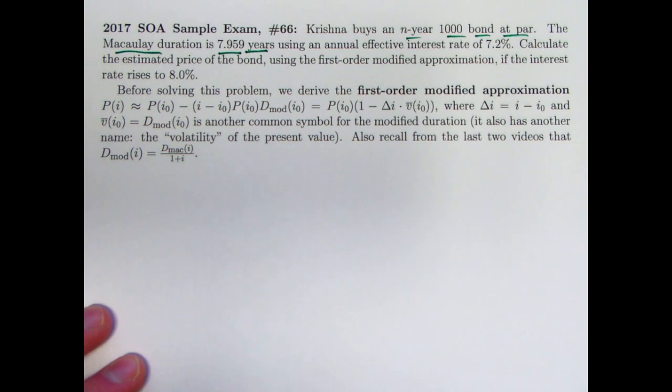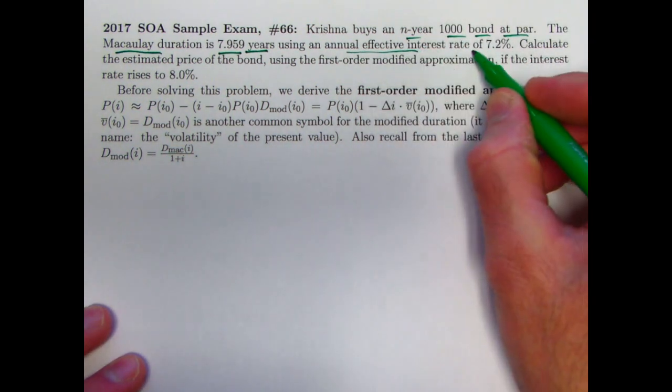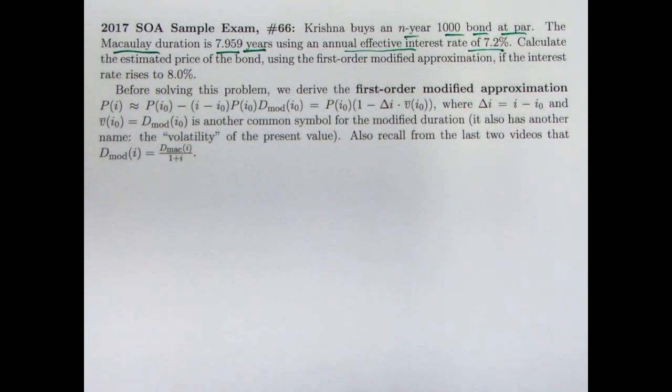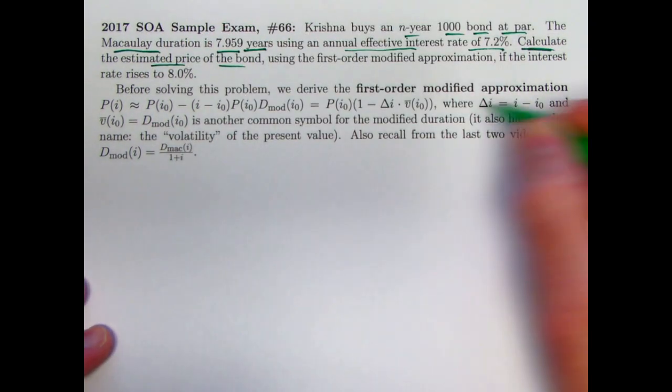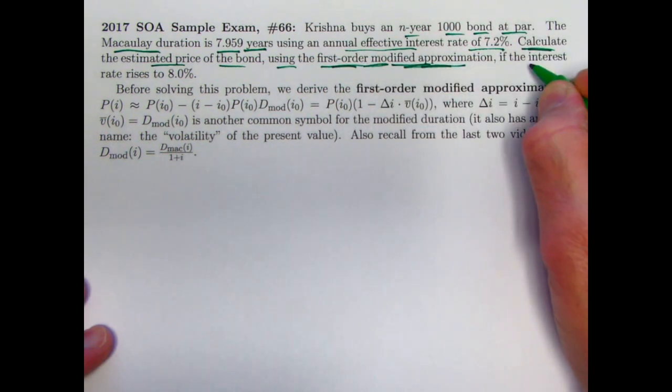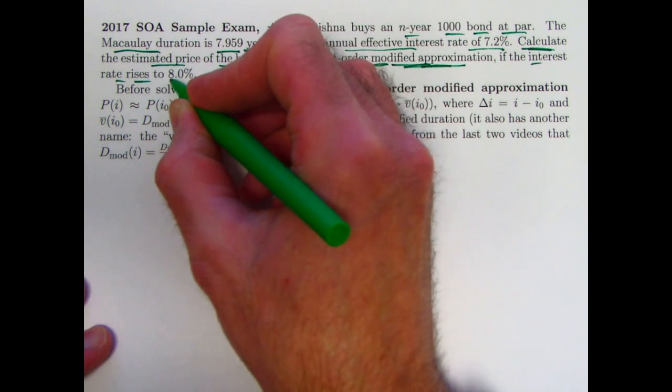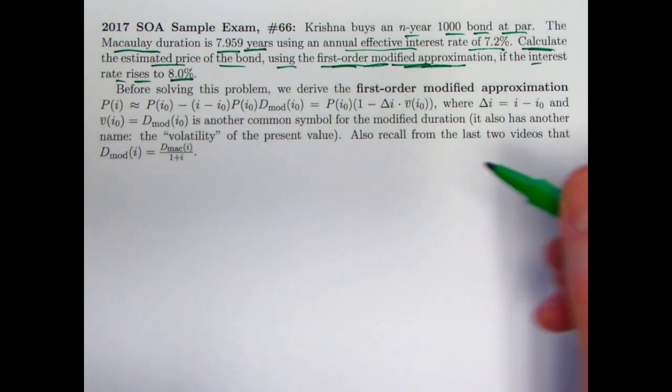The Macaulay duration is 7.959 years with respect to an interest rate. The duration is always with respect to both the payment stream and a given interest rate. The annual effective interest rate here is 7.2%, and the assumption would be that the coupons would be paid annually as well. Calculate the estimated price of the bond using something called the first-order modified approximation if the interest rate rises, increases, to 8% from 7.2%.